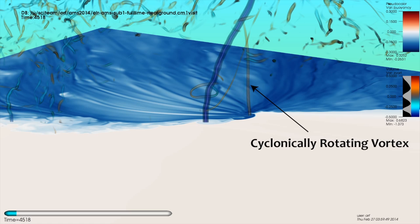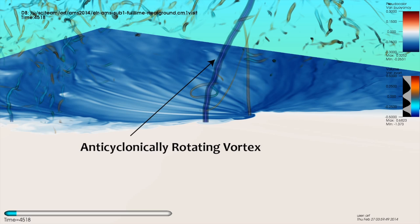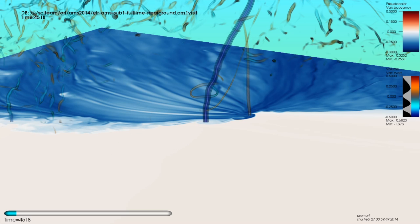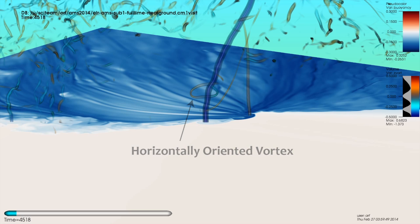Red fields indicate regions of counterclockwise, or cyclonic, rotation, while blue fields indicate regions of clockwise, or anticyclonic, rotation. This technique also allows for the visualization of horizontally-oriented vortices. As is the case with the vast majority of observed tornadoes in the northern hemisphere, our simulated tornado rotates cyclonically.